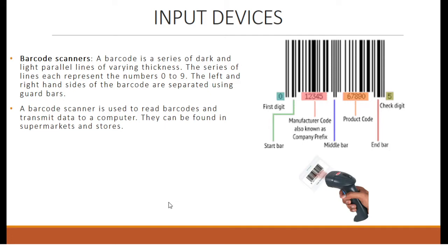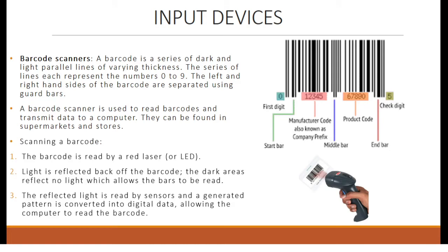A barcode is a series of dark and light parallel lines of varying thickness, where the series of lines each represent the numbers 0 to 9. The left and right-hand sides are separated using guard bars. A barcode scanner reads barcodes and transmits data to a computer; they are commonly found in supermarkets and stores. To scan: the barcode is read by a laser or LED, light is reflected back off the barcode — dark areas reflect no light — and the reflected light is read by sensors. The generated pattern is converted into digital data, allowing the computer to read the barcode. The diagram on the top right shows an example barcode, and the picture on the bottom right shows a barcode reader.